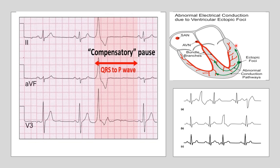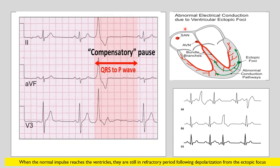So the next normal SA nodal impulse will not be able to generate depolarization in the ventricle and there will be no contraction. The second succeeding impulse from the SA node will form a normal beat. The interval between this extrasystole and the post-extrasystole beat is longer.